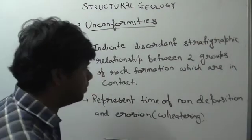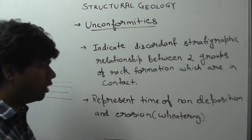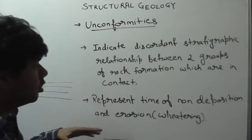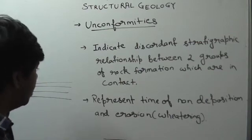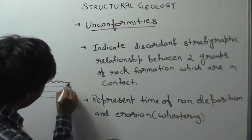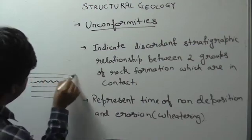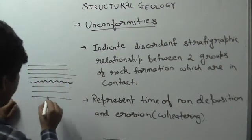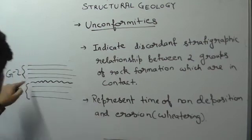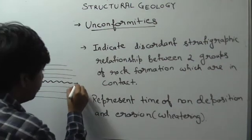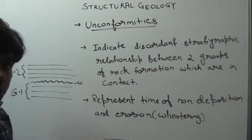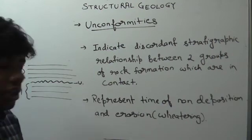While the unconformity represents a considerably long time of non-deposition and/or erosion or weathering of the strata, and this causes the formation of the unconformity. Usually what we encounter at an unconformity is not a planar structure but rather an irregular surface, over which new deposition takes place. So we have group 1 below and group 2 above, and the unconformity separates group 1 from group 2, representing a time period of non-deposition as well as erosion.